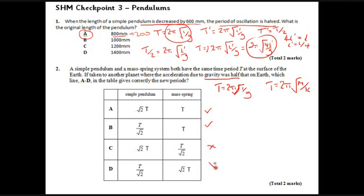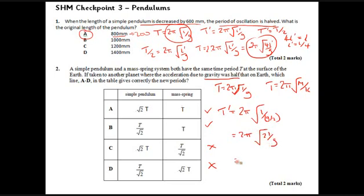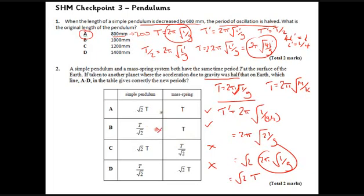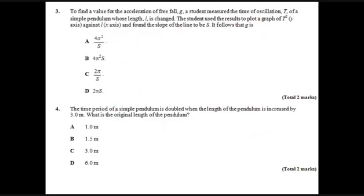That narrows things down — two options might be right and two are definitely wrong. For the pendulum's new period: t-dash = 2π√(l/(g/2)) = 2π√(2l/g) = √2 · 2π√(l/g) = √2·t. So the pendulum's period increases by a factor of √2, making that answer wrong too — the correct answer is A.